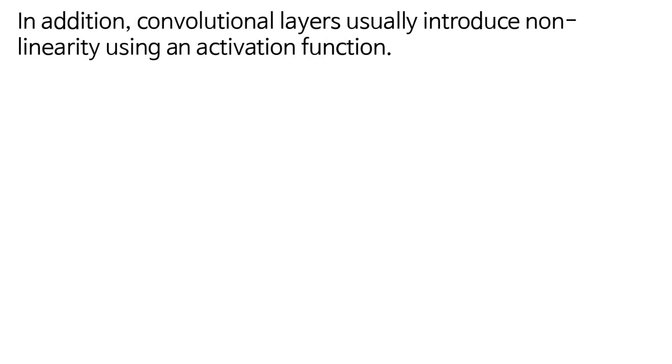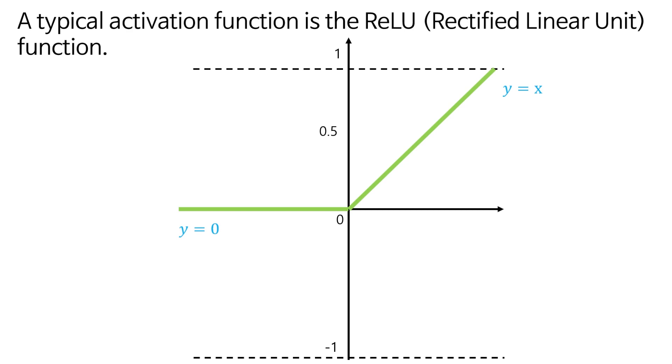In addition, convolution layers usually introduce non-linearity using an activation function. A typical activation function is the ReLU, Rectified Linear Unit function. The activation function applies non-linearity to the output of the convolutional layer and allows the model to learn complex patterns.